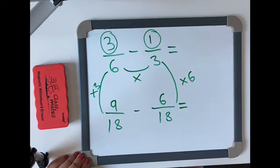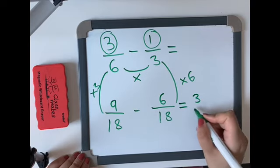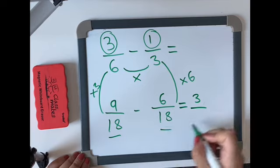Now we can take away. 9 take away 6 is 3. And we keep our denominators the same.